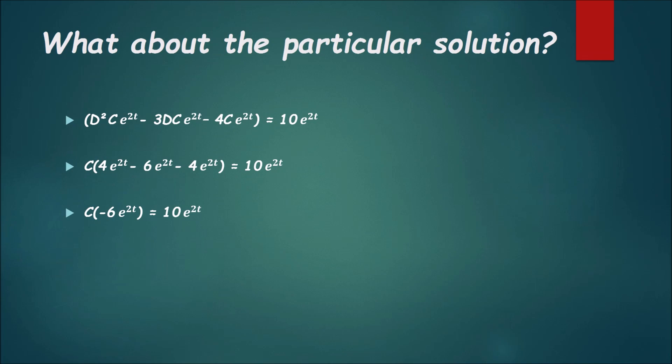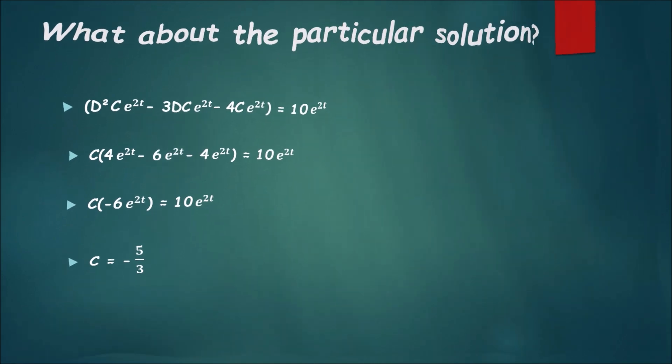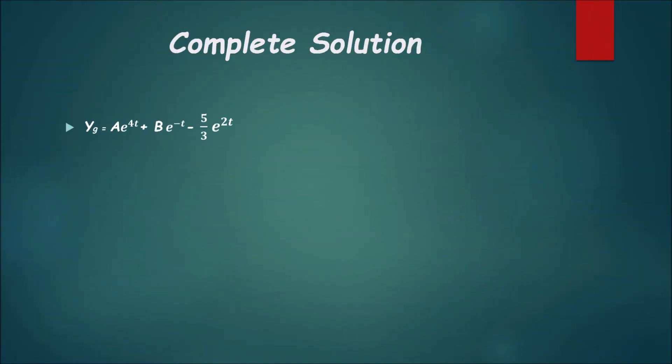In my next step, when I combine like terms, I got negative 6Ce to the 2t. This has been straight algebra since the last slide. Now solve for C, divide both sides by the negative 6e to the 2t to get C is equal to negative 5 thirds. So now that we have that coefficient, our complete general solution will be Ae to the 4t plus Be to the negative t minus 5 thirds e to the 2t.